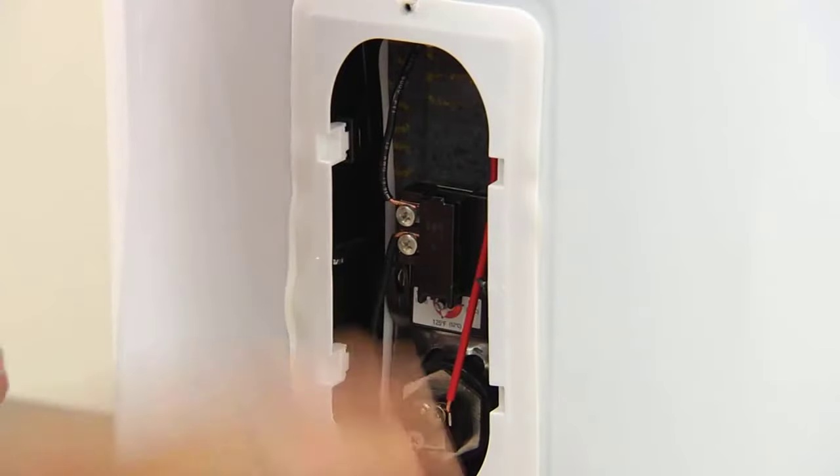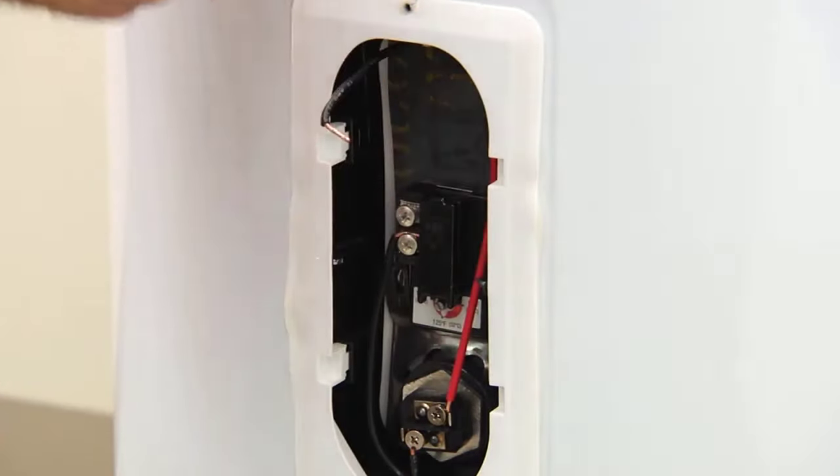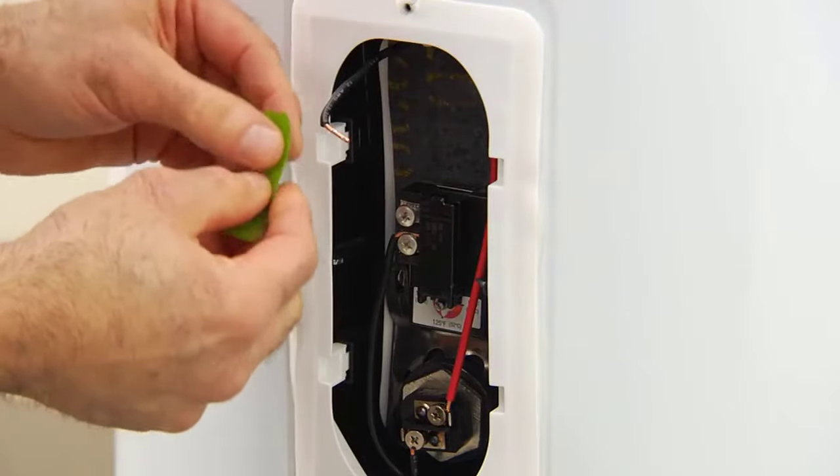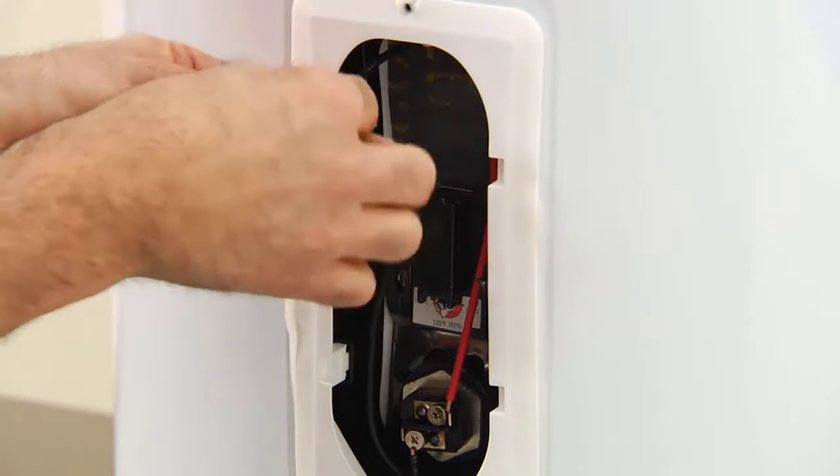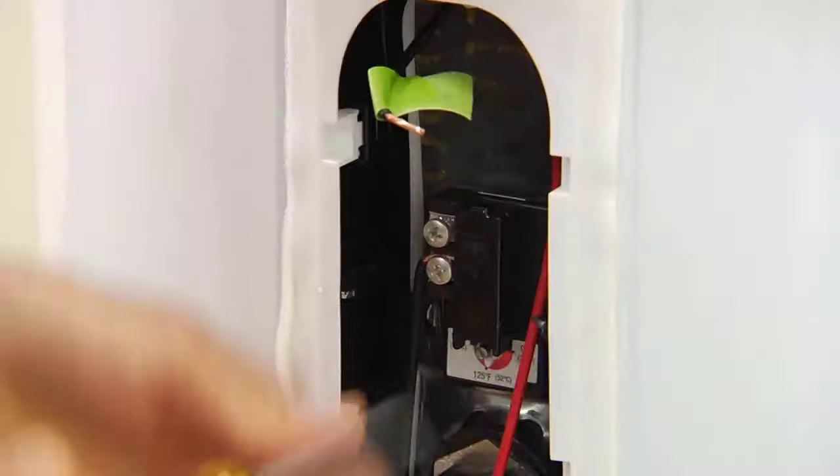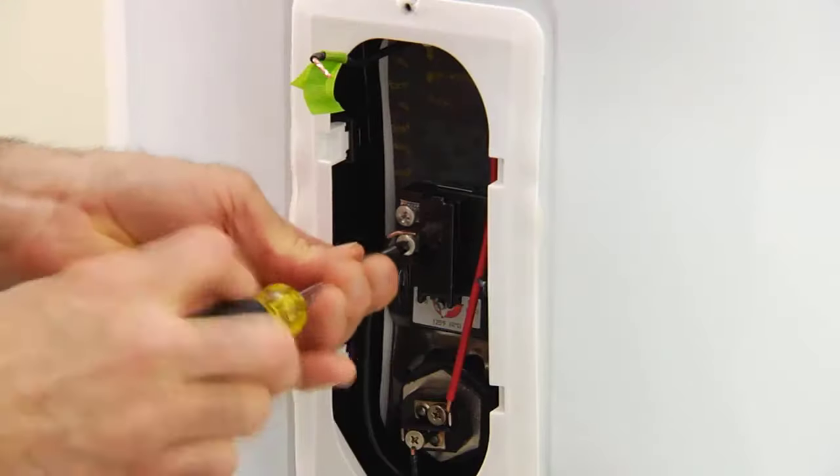Disconnect the thermostat wires. Tag the wires before removing them from the screw terminals to eliminate incorrect wiring later. You can also take a digital snapshot of the wiring for reference.